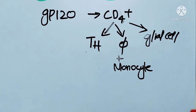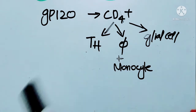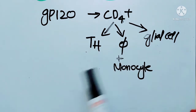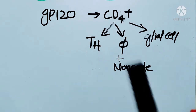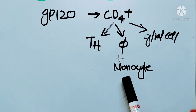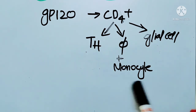GP120 focuses on these important cells — T helper cells, monocytes, and macrophages — which are the most important cells in the immune system. The immune system has a backbone of T helper cells. B cells form antibodies, but T helper cells help them do so. Macrophages and monocytes are also key players.